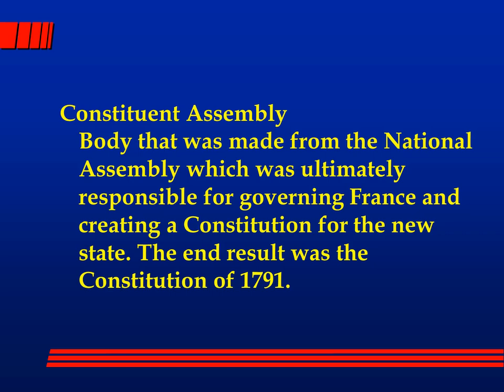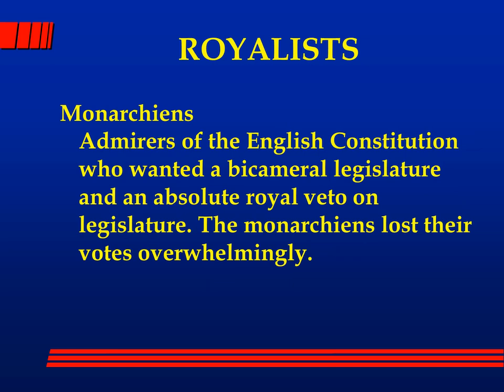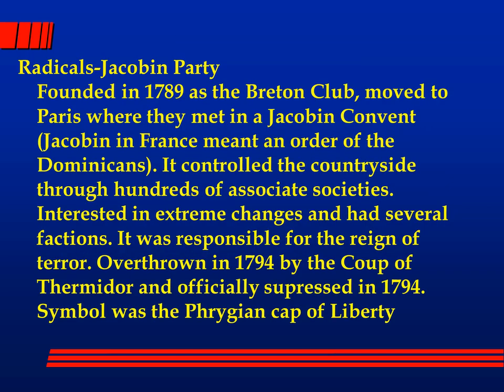The royalist Monarchiens admired the English constitution and wanted a bicameral legislature with an absolute royal veto on legislation — no overturning the veto as in the United States. They're going to be overwhelmingly passed over. The Jacobins, founded in 1789 and originally known as the Breton Club, moved to Paris and got their name because they met in a Jacobin convent. They controlled the countryside through hundreds of social societies, were interested in extreme changes, had several factions, and are responsible for the Reign of Terror. Overthrown in 1794 in the Thermidorian Reaction, officially suppressed by the Directory in 1794. Their symbol is the Phrygian cap of liberty with the cockade.